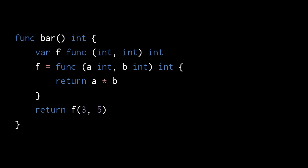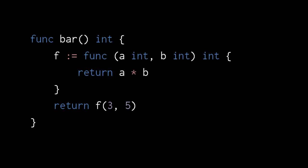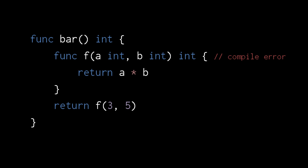Much like JavaScript, Go allows us to create anonymous functions. Here inside the function bar we create a variable f to be of type func with two int parameters and returning int. We can then assign to f an anonymous function with that same signature, and having done so we can then call f as a function. Understand that a function signature — its parameter types and return types — is an integral part of the function's type. Attempting to assign a function to f with a different signature triggers a compilation error. Like with other variable declarations, the type of f can be inferred from its initialization.